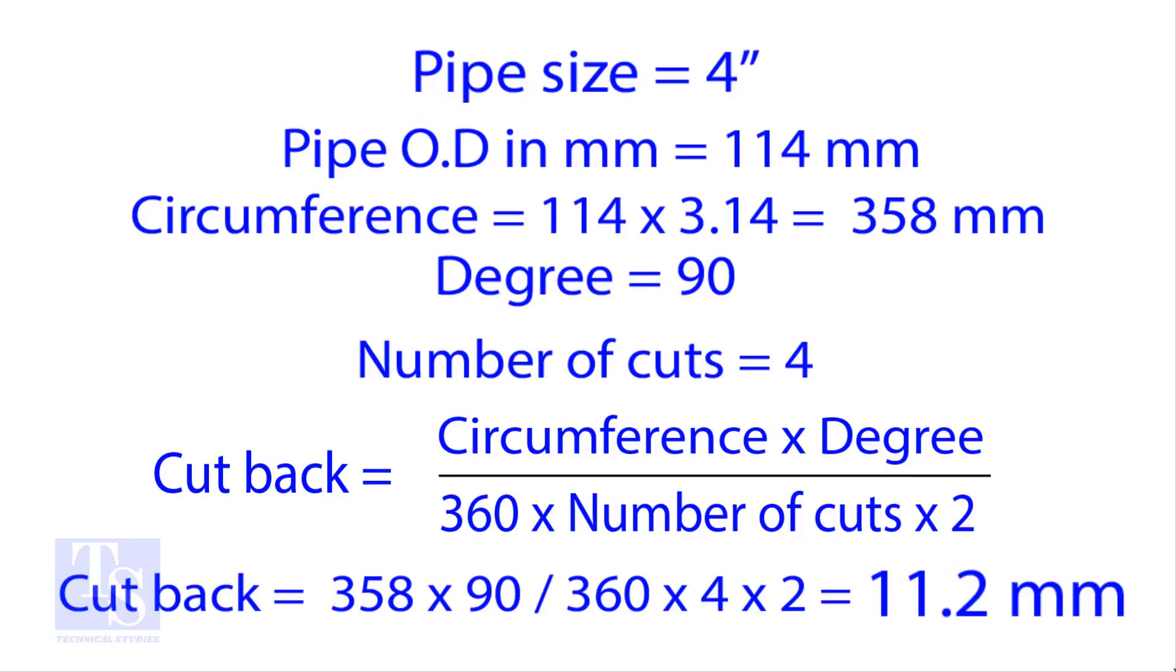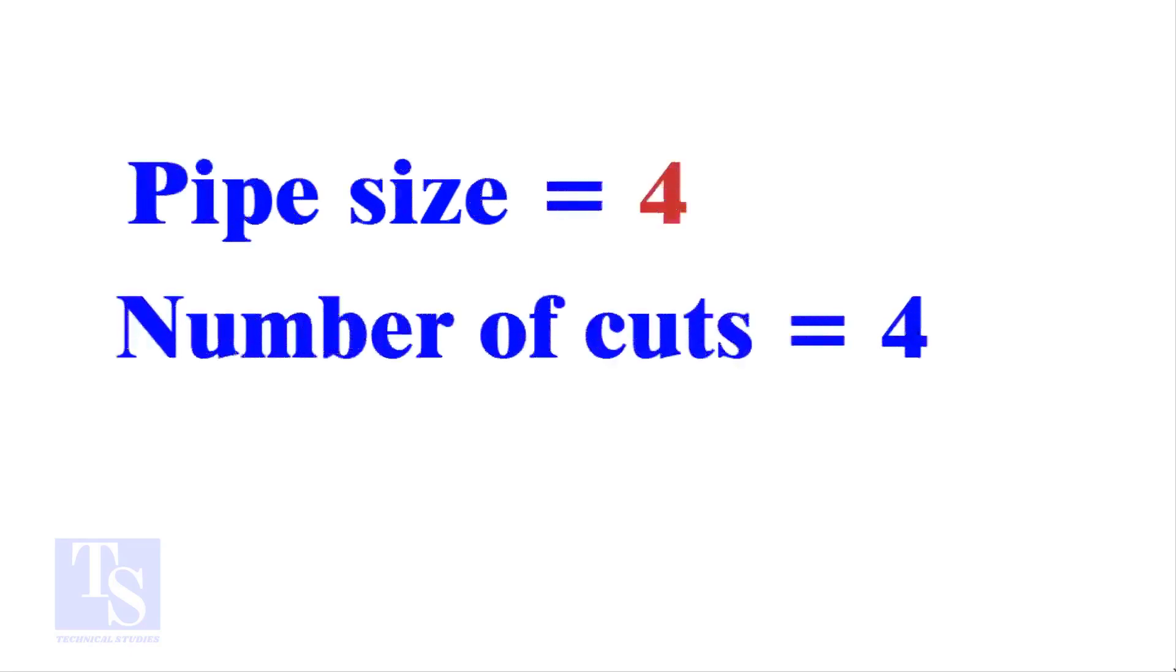Let us try the quick method. See the fast calculation method now. Let the pipe size be 4 inch and the number of cuts also be 4. Remember, you can use any number of cuts up to 9.